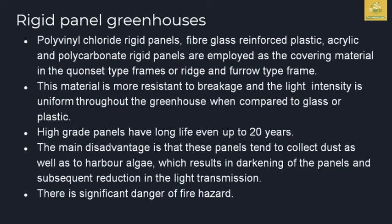Rigid panel greenhouses use polyvinyl rigid panels such as fiberglass reinforced plastic, acrylic, or polycarbonate. This material is very resistant to breakage. It provides uniform light intensity distribution in the greenhouse. Compared to glass and plastic, rigid panels are better in terms of durability. These high-rate panels last a long time and provide good light performance.